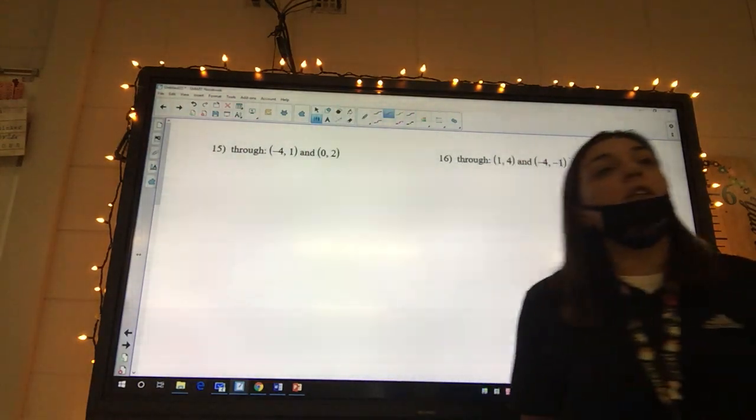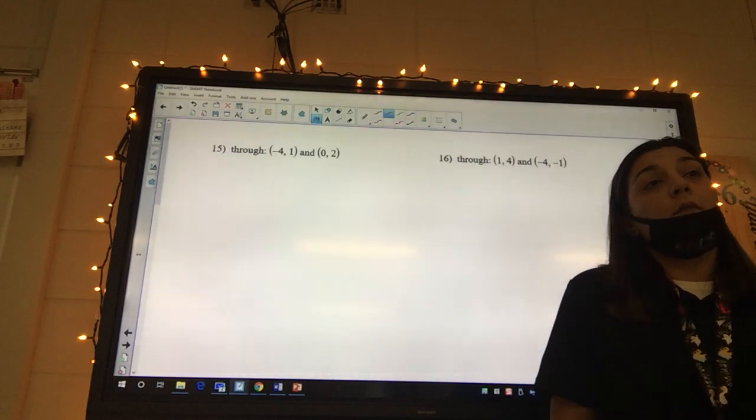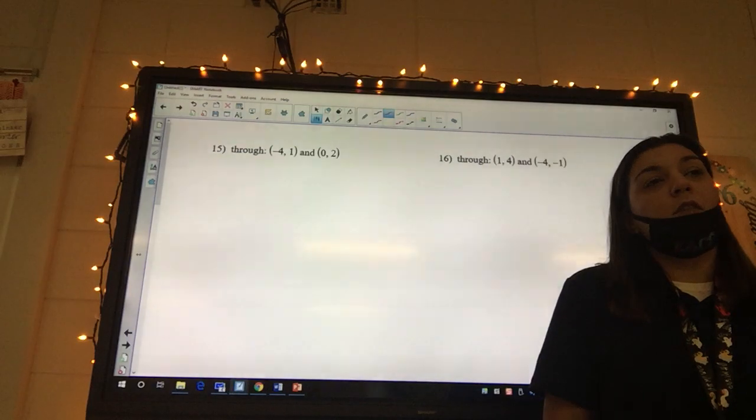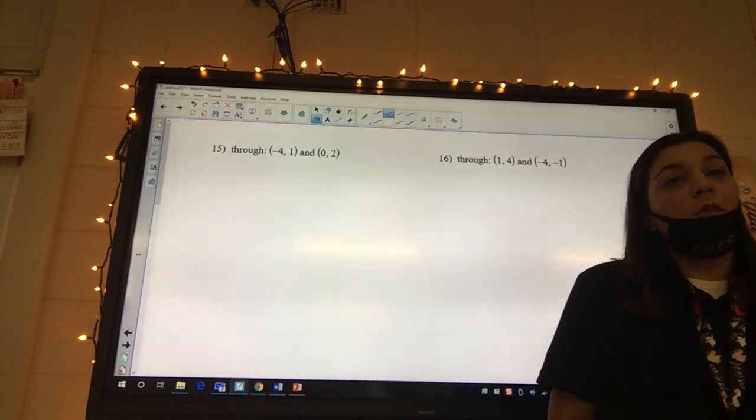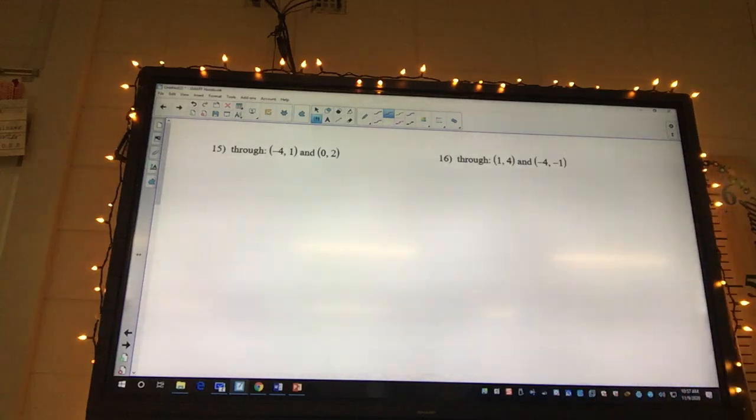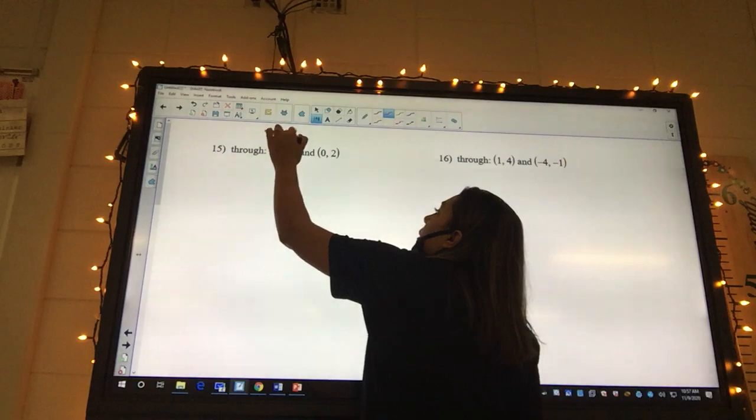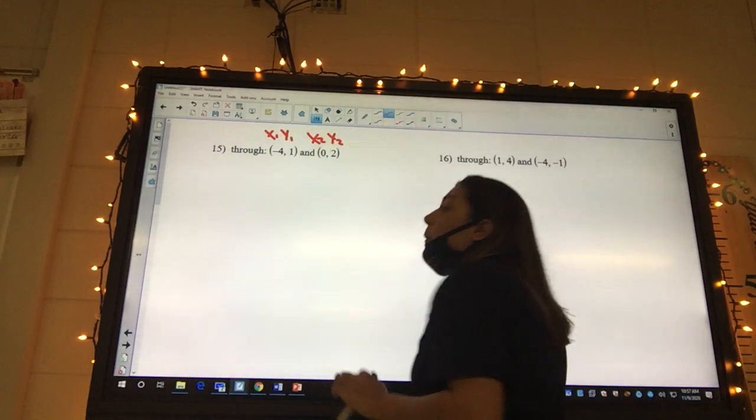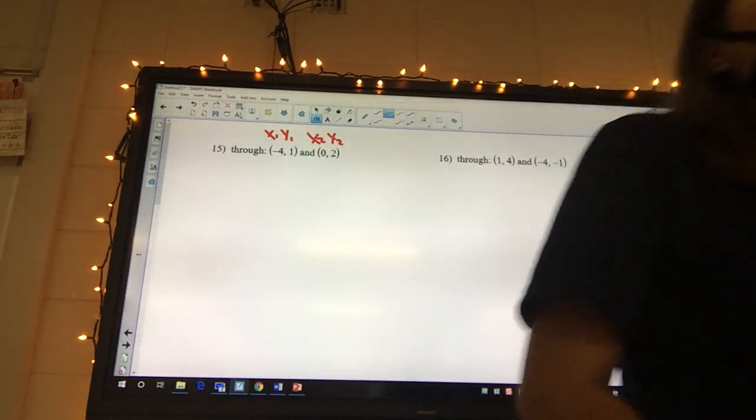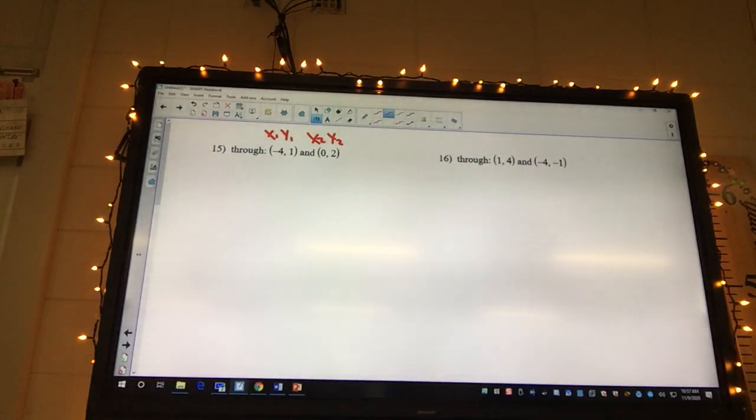Okay, problem 15. What's the first thing we need to do? I said don't be lazy, label. So x1 y1 x2 y2, we want to label. So we know we have two points, so what formula do we need to use first? What's the formula called that we use when we have two points?